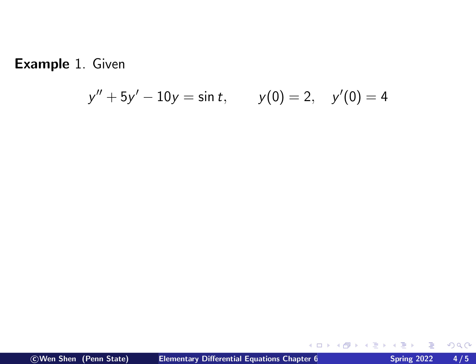Now let's give a concrete example. So we have this equation here, y double prime plus 5y prime minus 10y equal to sine t. And then y(0) is 2, y prime 0 is 4. So it's just a specific example of the general case we talked about in the previous slide.